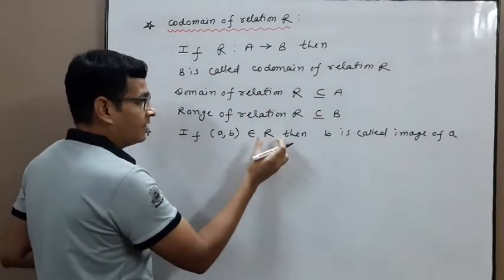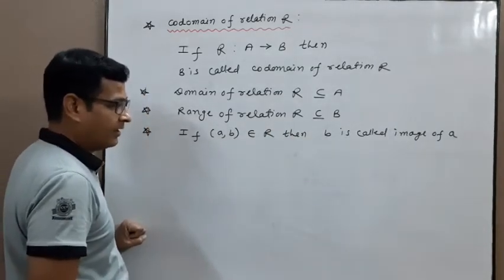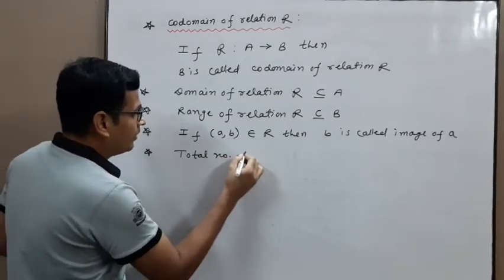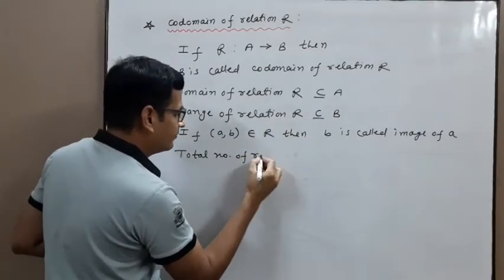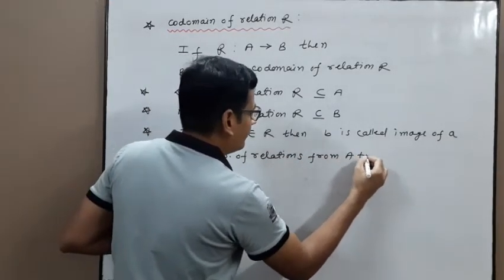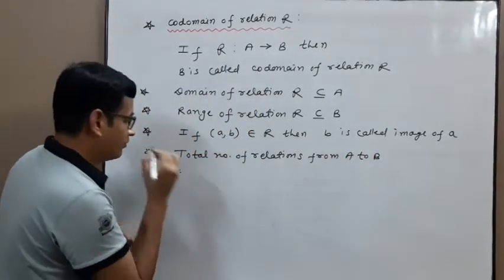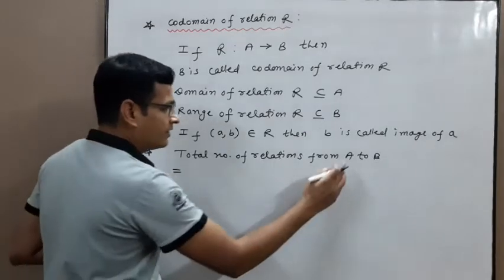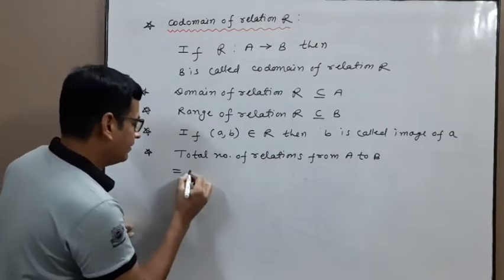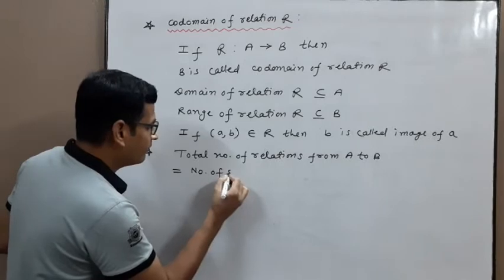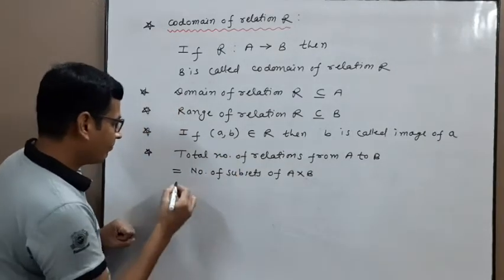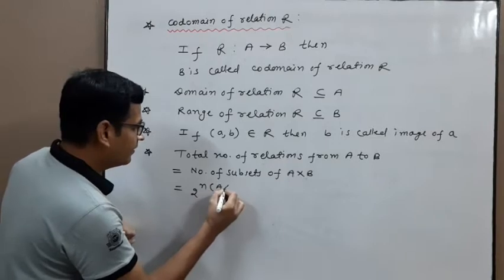If (a, b) belongs to R, then b is called the image of a. Total number of relations from A to B: since a relation is a subset of the Cartesian product A cross B, the number of relations equals the number of subsets of A cross B, which is 2 raised to the power of |A cross B|, where |A cross B| equals |A| times |B|.